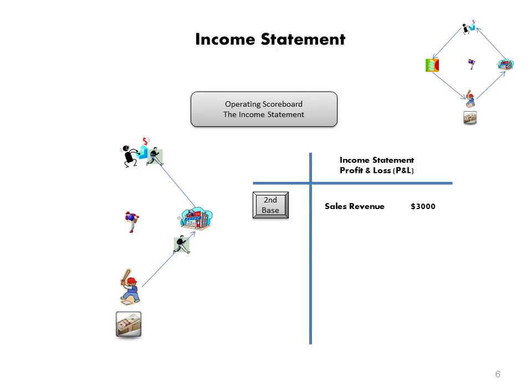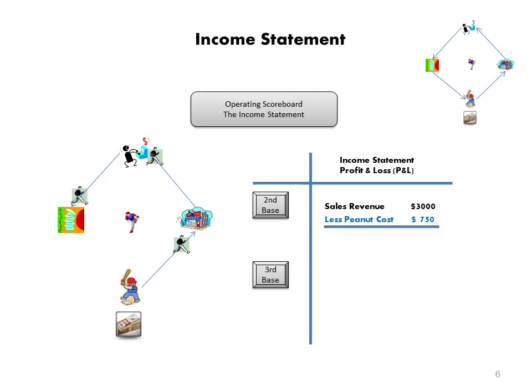At second base, we have revenue of $3,000. We have to turn around and pay our workers, rent, and other elements — we have expenses and bills to pay. You've sold the peanuts; let's assume you've sold all the peanuts you had, which was $750. Out of that $3,000, $750 goes back to repurchase the peanuts. That leaves you what we call a gross profit of $2,250. Sales less our cost of the goods we're selling — the peanut cost — gives us gross profit. Any company with inventory will have this kind of income statement: sales less the cost of goods sold gives us gross profit.